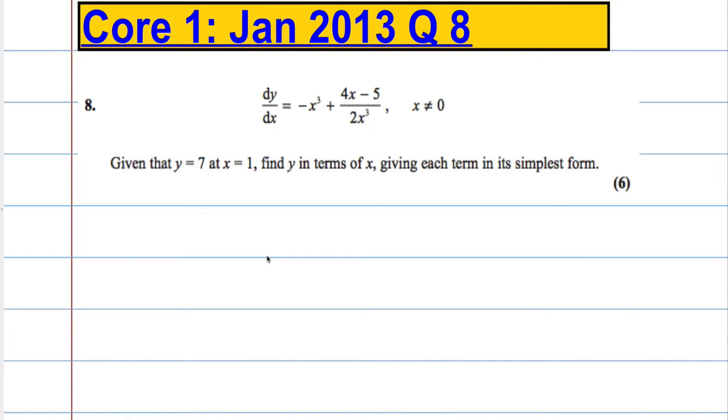OK, question 8. dy/dx equals negative x cubed plus 4x minus 5 over 2x cubed, where x is not equal to zero. Given that y equals 7 at x equal to 1, find y in terms of x, giving each term in its simplest form.